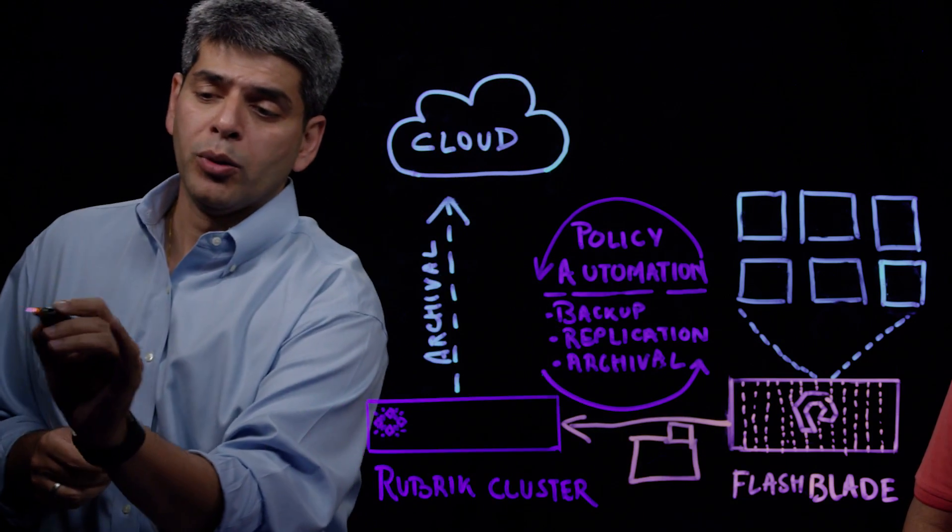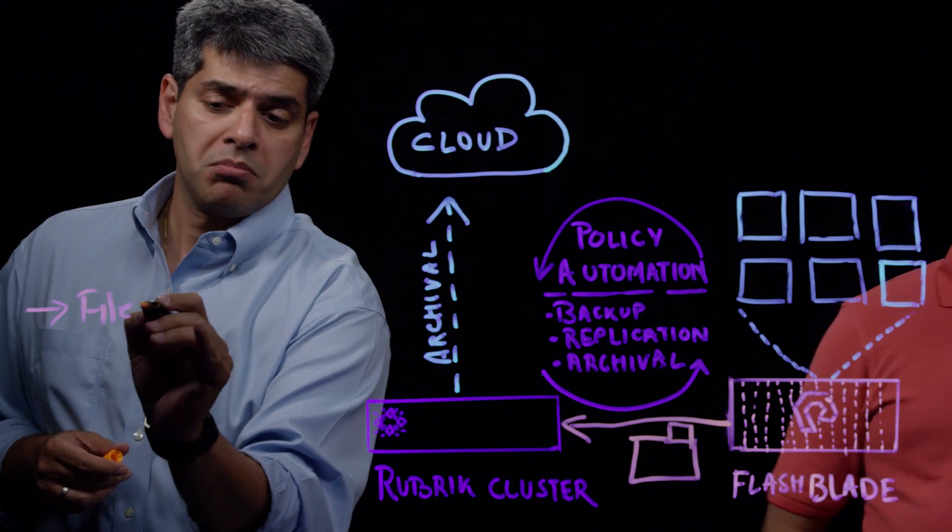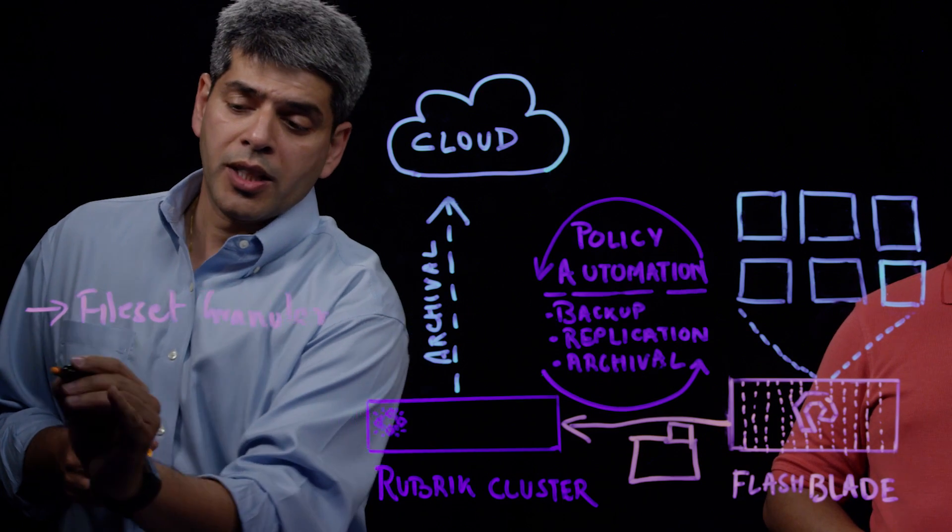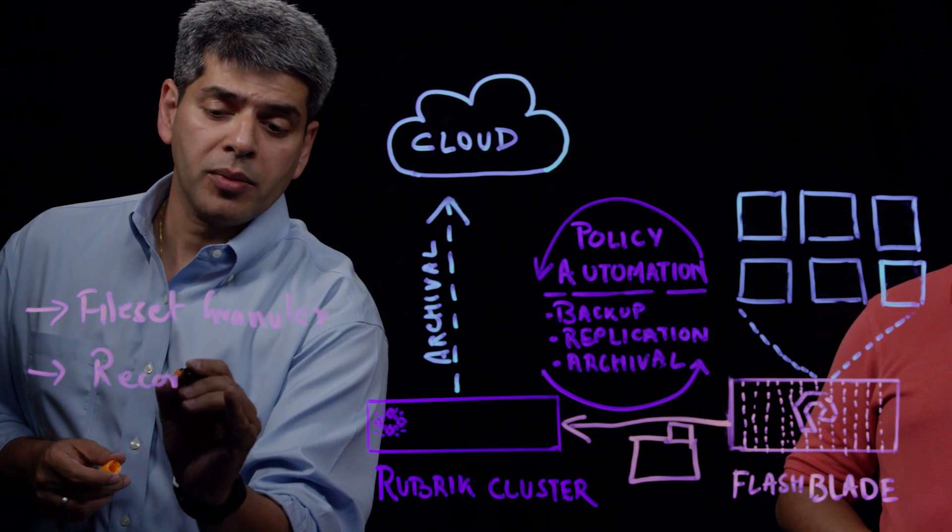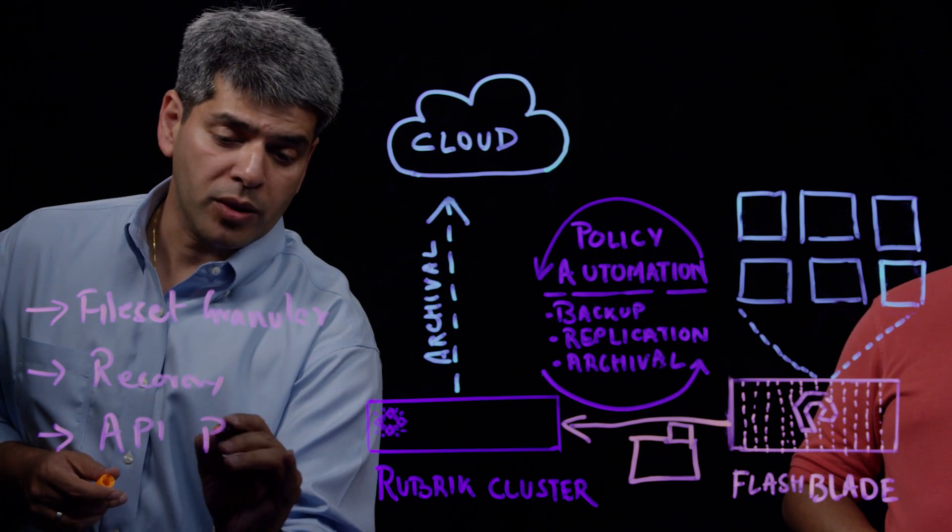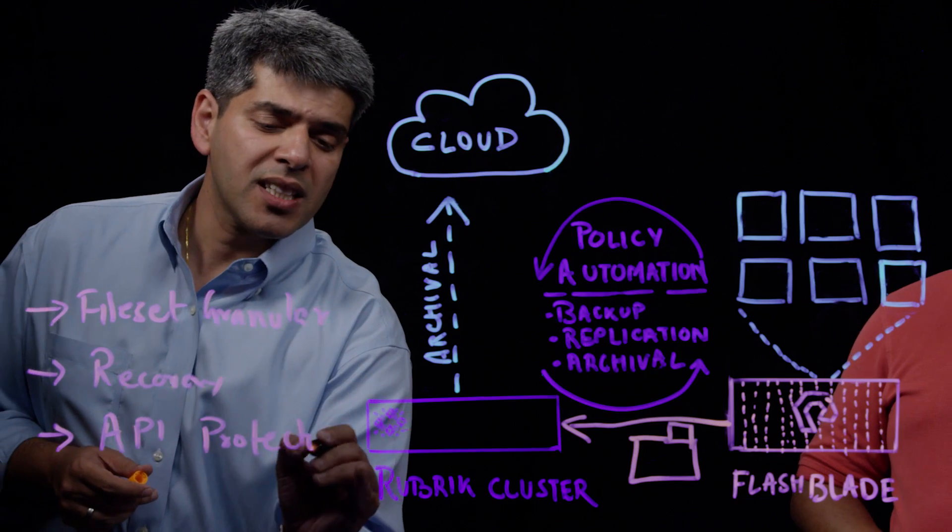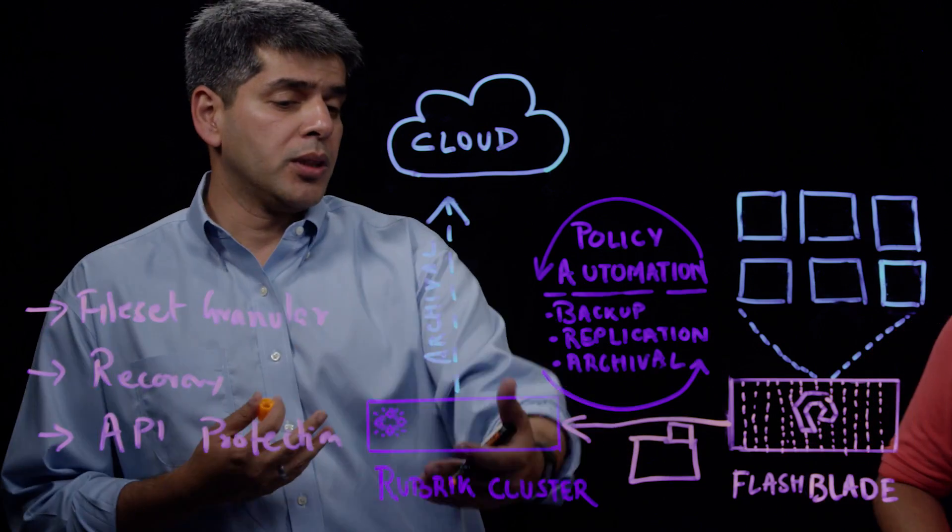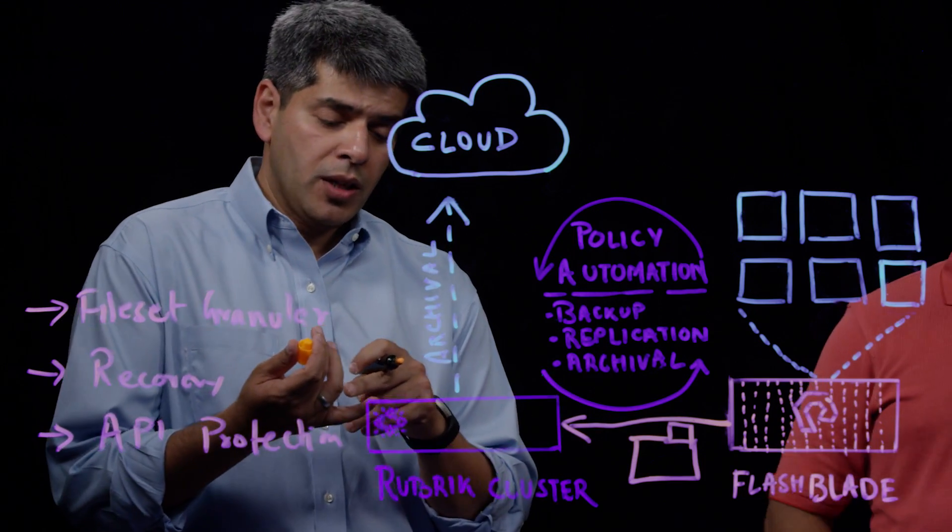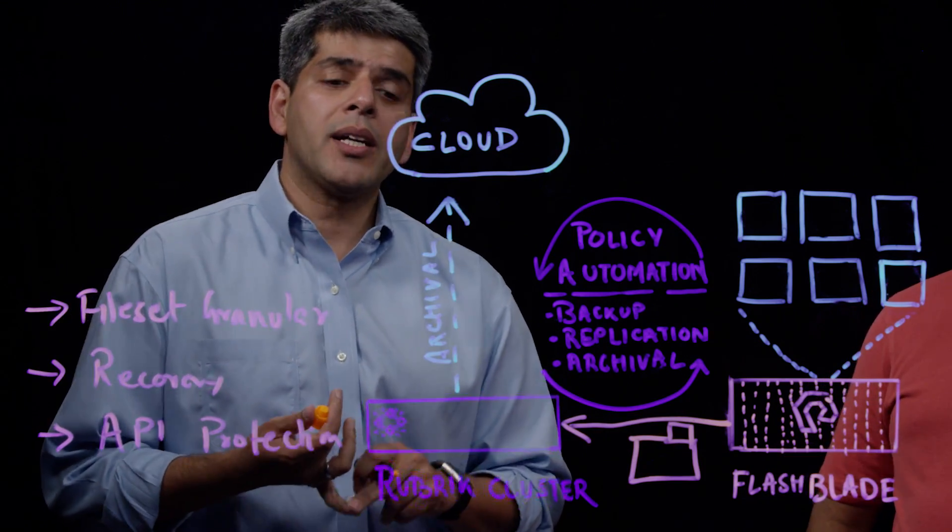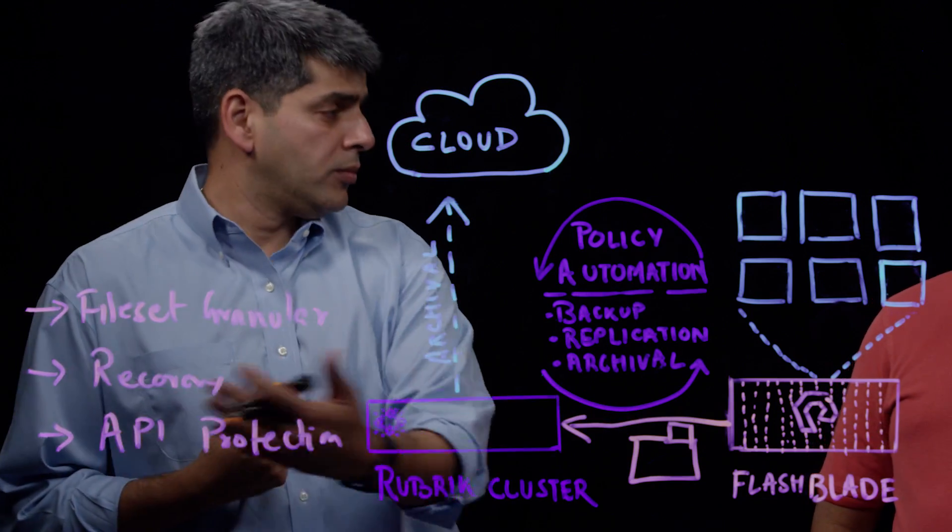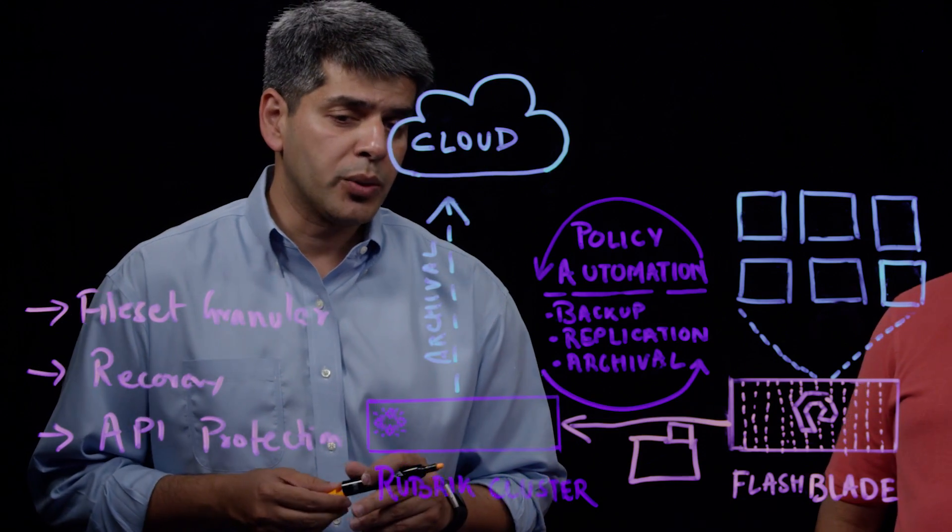So our file set granular backup can do a recovery from any point in time and do fully automated API based protection. What it means is all your user has to do is just mount the NAS share from Flash Blade onto Rubric. And once it's mounted, we do the full backup replication and archival of those NAS shares from Rubric cluster to another Rubric cluster using replication technology and also archival to the cloud.